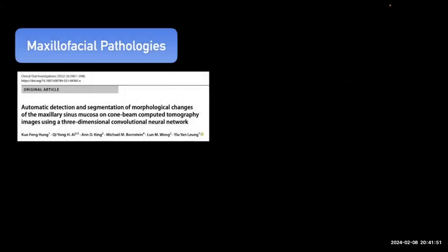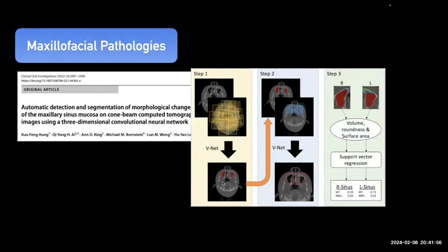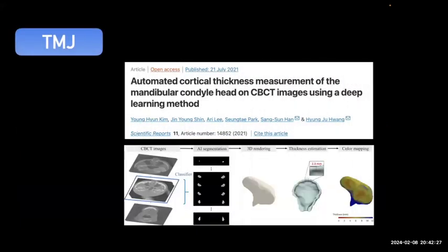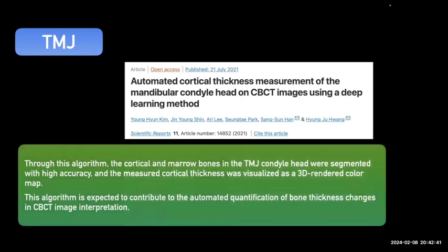A study on automatic detection and segmentation of morphological changes of maxillary sinus mucosa on CBCT assessed volume, roundness, and surface area in both sinuses. The model showed high accuracy for detecting and segmenting mucus retention cysts and mucosal thickening in both ultra-low-dose and standard-dose CBCT images. For the TMJ, we now have models performing automated cortical thickness measurements of the mandibular condylar head on CBCT using deep learning, generating 3D rendered colored maps expected to contribute to automated quantification of bone thickness changes.